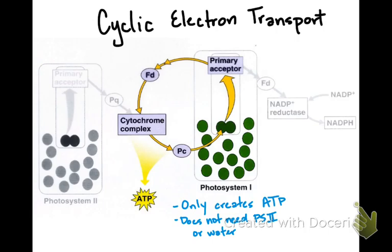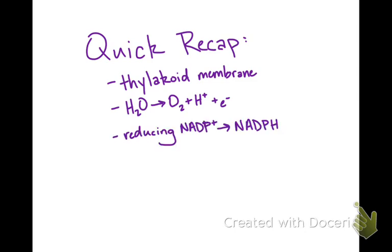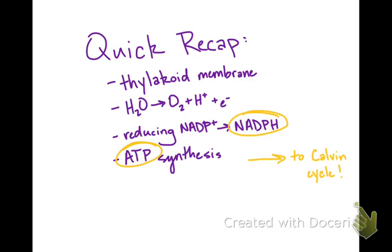Both cyclic and non-cyclic electron transport are occurring in the membranes of terrestrial plants — specifically the chloroplast found in cells of terrestrial plants. Quick recap: these light-dependent reactions take place in the thylakoid membrane. We're breaking water into oxygen, hydrogen ions, and electrons which pass through the electron transport chain. We reduce NADP+ into NADPH, and we synthesize ATP through chemiosmosis. Next up will be the light-independent reactions, where ATP and NADPH move to the Calvin cycle to power that process.